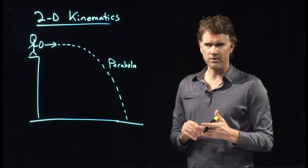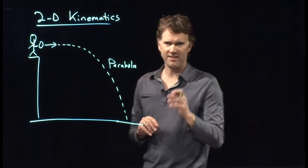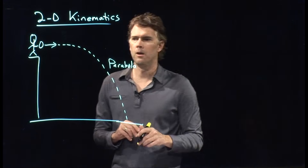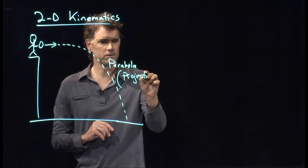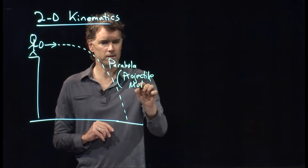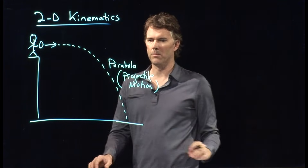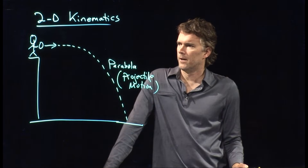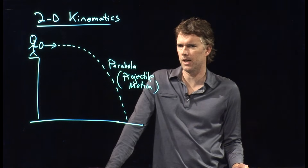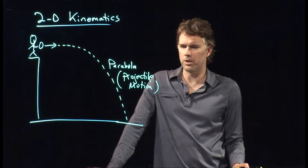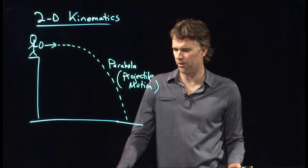Is there another name for this projectile after it leaves my hand — another name for that type of motion? I'll give you a hint: I just gave you the two words that are in the answer. Projectile motion. This is projectile motion. We have launched an object, it follows a parabola, and it is projectile motion — that's what we call it. This is the motion that governs a lot of things as they move around near the surface of the Earth.